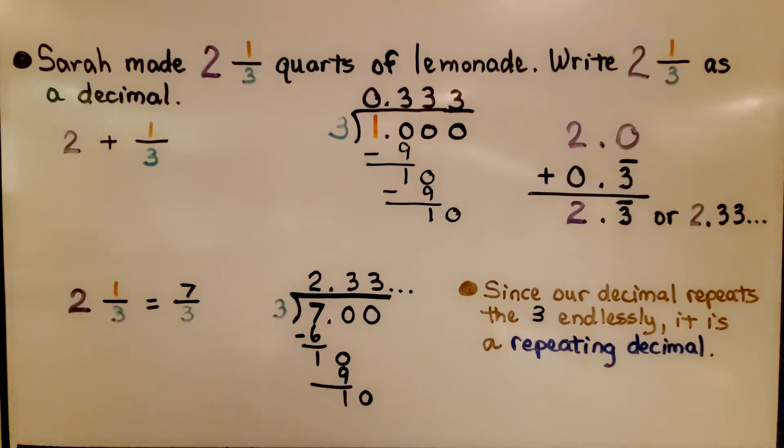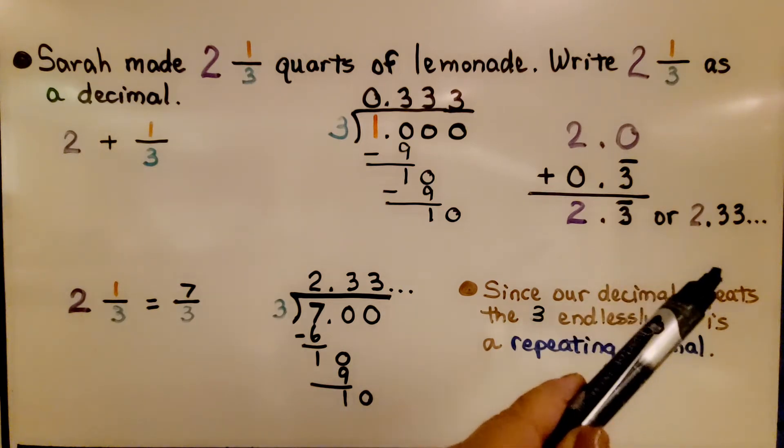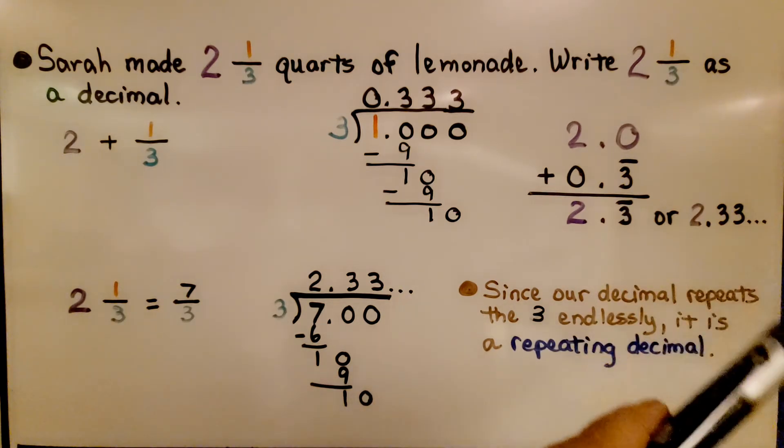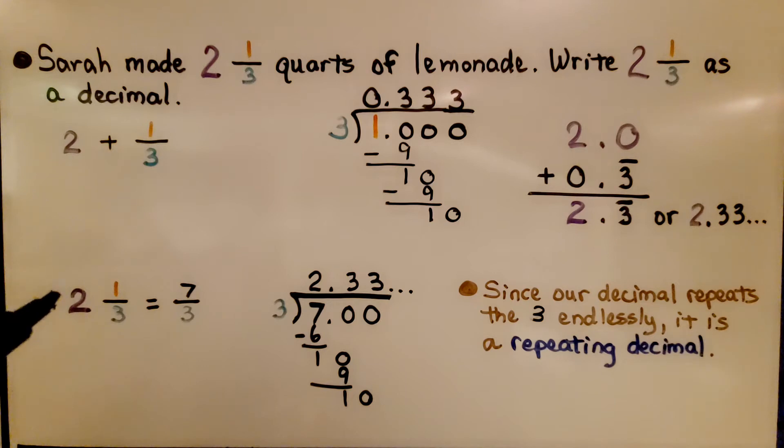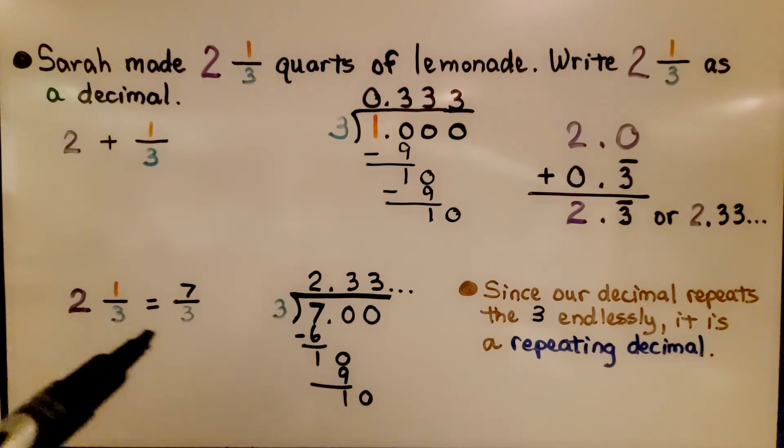We can also write it as 2.33 with the ellipses. We can also do 2 times 3 is 6 plus 1 is 7, write it over the 3 denominator and have 7/3.